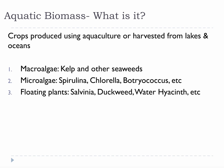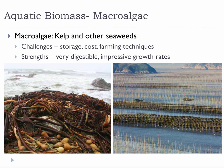For our purposes, aquatic biomass is defined as crops produced using aquaculture or harvested from lakes and oceans. We will focus on three main types: macroalgae, microalgae, and floating plants. The difference between macroalgae and microalgae is that macroalgae are big organisms like seaweed and kelp, but microalgae are single-celled organisms like spirulina and chlorella.